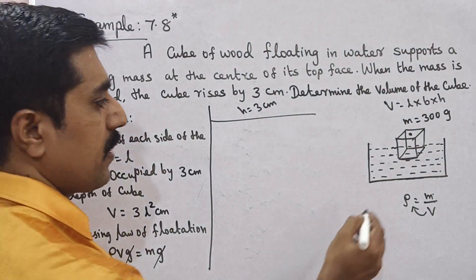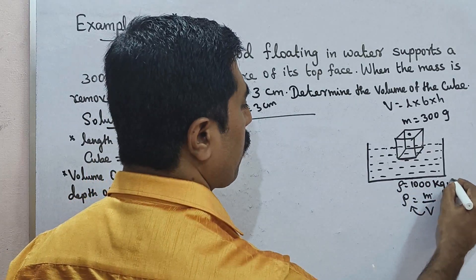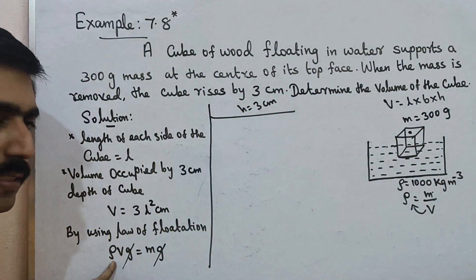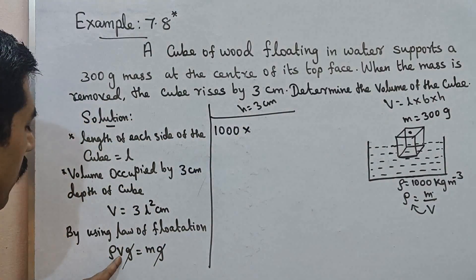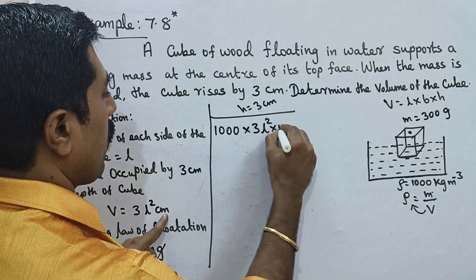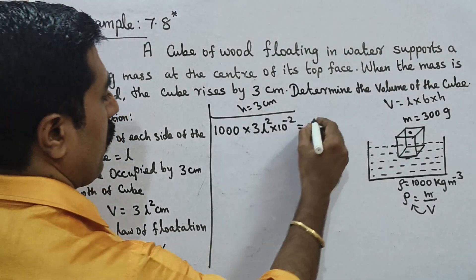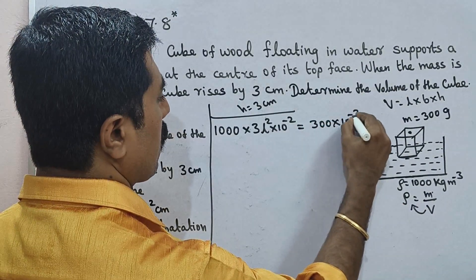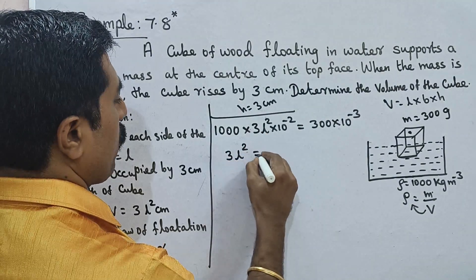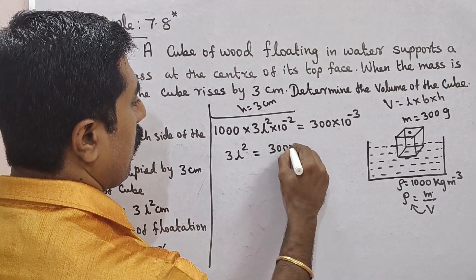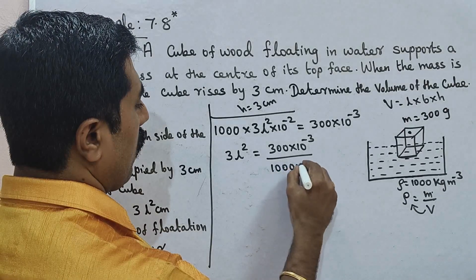The density ρ is that of water, which is 1000 kilogram per meter cubed. The volume V is 3L² times 10 to the power minus 2 meters. The mass m is 300 grams, which equals 300 times 10 to the power minus 3 kilograms.